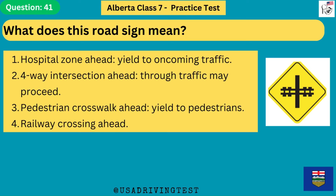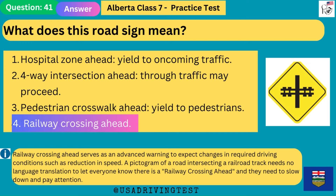What does this road sign mean? 1. Hospital zone ahead, yield to oncoming traffic. 2. 4-way intersection ahead, through traffic may proceed. 3. Pedestrian crosswalk ahead, yield to pedestrians. 4. Railway crossing ahead. The answer is 4: railway crossing ahead. Railway crossing ahead serves as an advanced warning to expect changes in required driving conditions such as reduction in speed. A pictogram of a road intersecting a railroad track lets everyone know there is a railway crossing ahead and they need to slow down and pay attention.